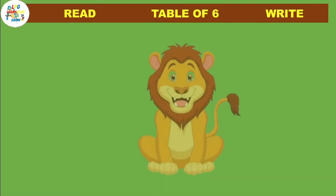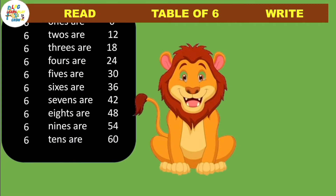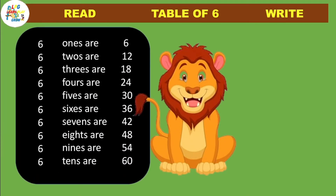Let's start table of 6 with Lion. Lion will teach us table of 6. 6 one's are 6, 6 two's are 12, 6 three's are 18, 6 four's are 24, 6 five's are 30, 6 six's are 36, 6 seven's are 42, 6 eight's are 48, 6 nine's are 54, 6 ten's are 60.